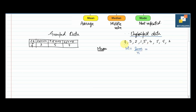So 3+5=8, 8+2=10, 10+1=11, 11+5=16, 16+4=20, 20+10=30, 30+2=32. We have 9 terms. So 32 divided by 9 gives you 3.55.